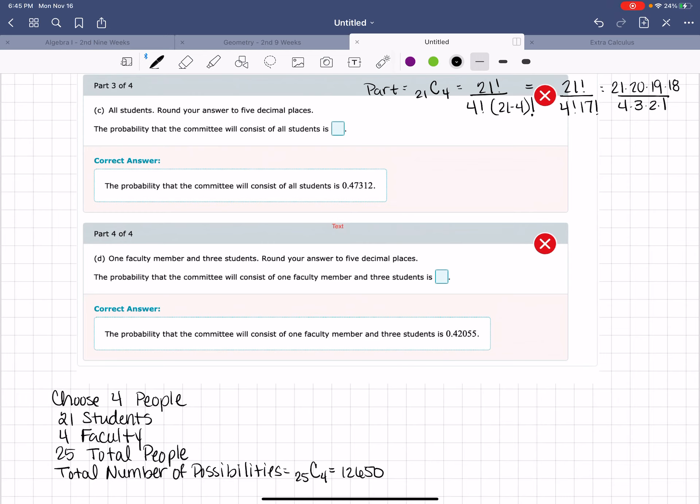When I put that into the calculator, we find that that is going to give me divided by 4 times 3 times 2, that gives me a possibility of 5,985.